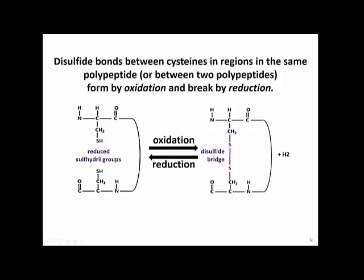They form by oxidation, and therefore can be disrupted by reduction using reductants. We will talk about using reductants to complete the denaturation as a method to study proteins later on.